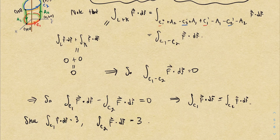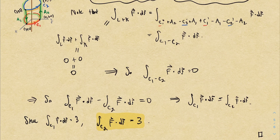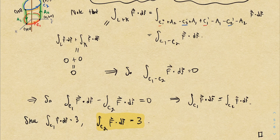Pretty slick. Writing this up carefully is really annoying, so don't worry too much about it — if you can follow the general idea, you're okay. Keep an example like this in the back of your mind for when we start talking about Green's theorem and Stokes' theorem, where we'll be able to make similar conclusions with much less work. It's a cool example demonstrating the power of conservative vector fields.